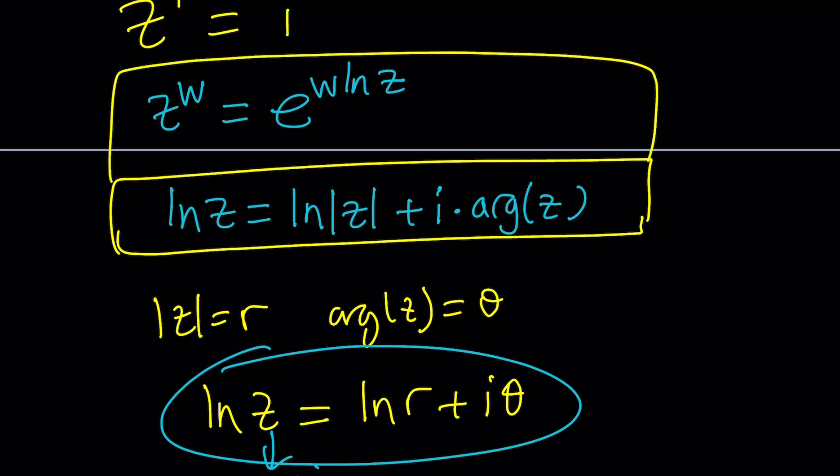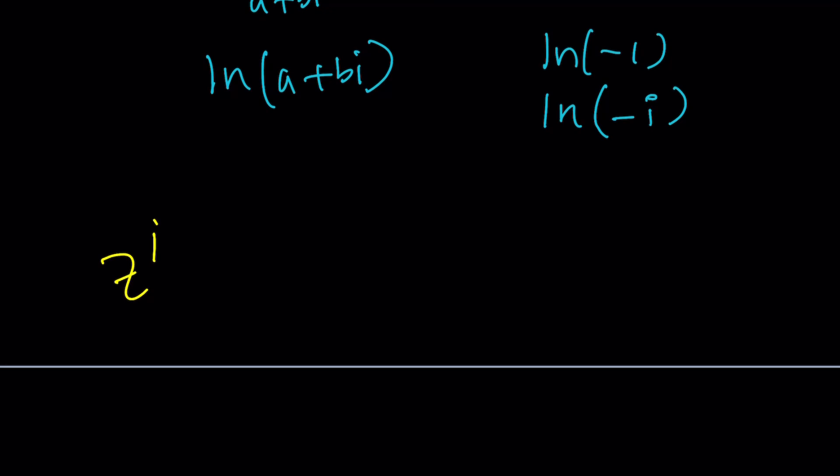So we have z to the i and z to the i can be written as e to the power i ln z. And that's equal to i. Awesome. We're going to get to ln z a little later. Let's go ahead and just figure this out. I have an exponential on the left and i on the right. So let's go ahead and use the polar form for i.